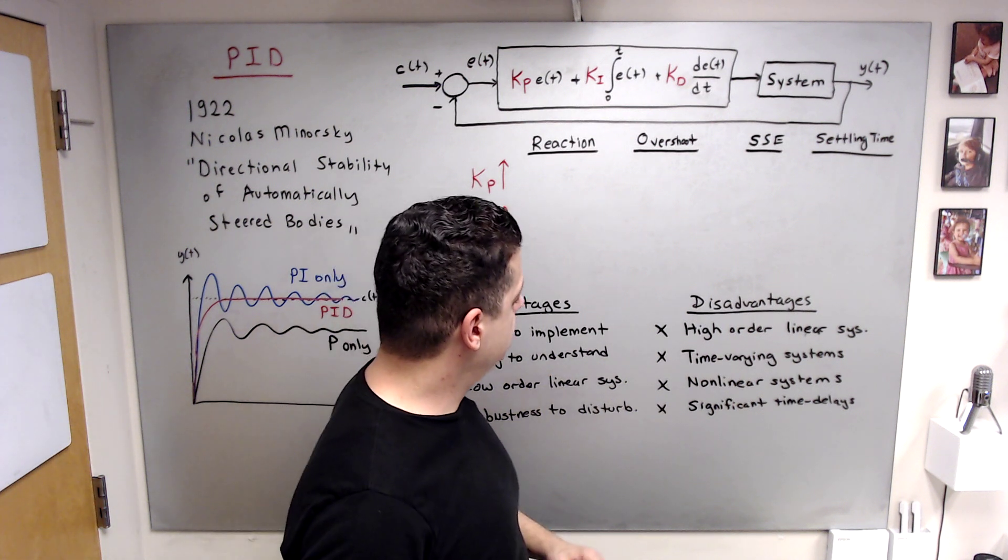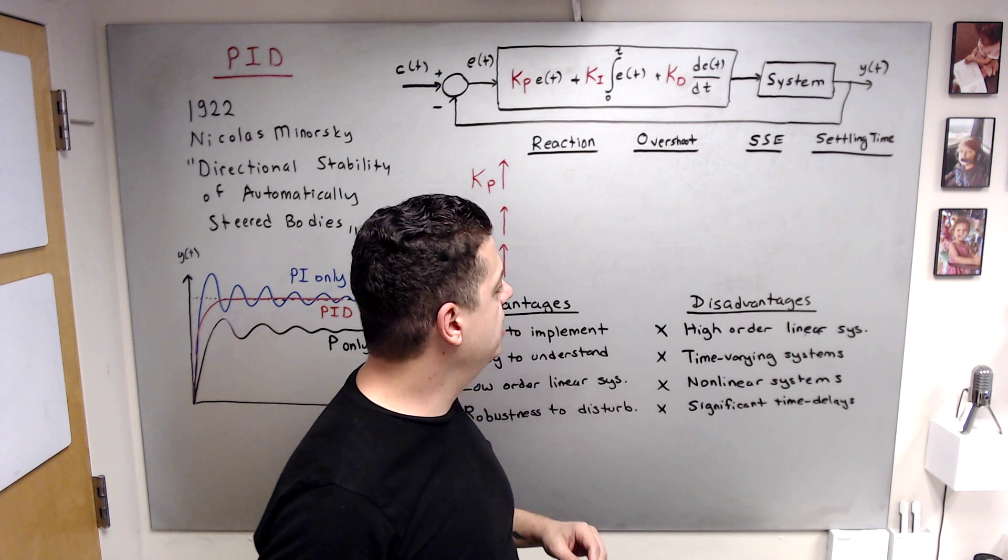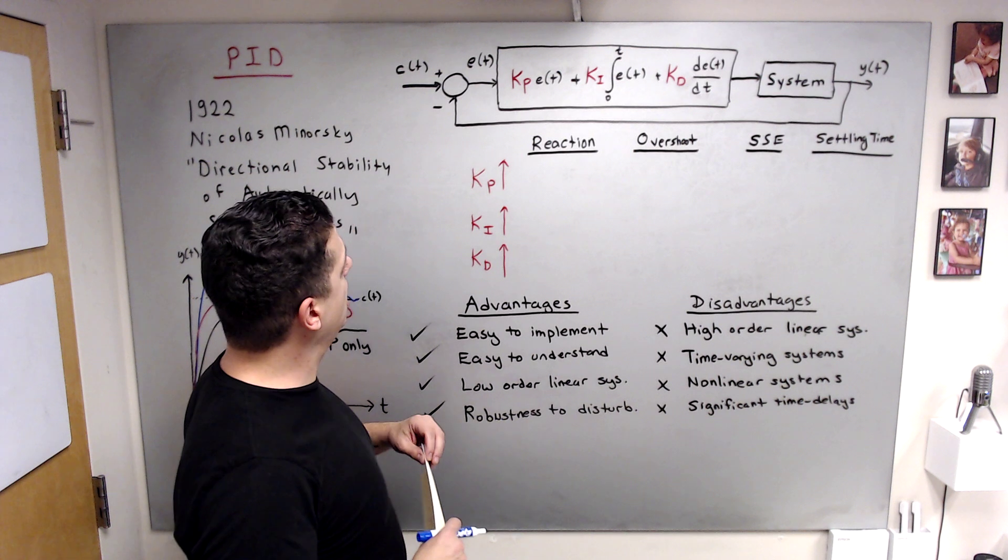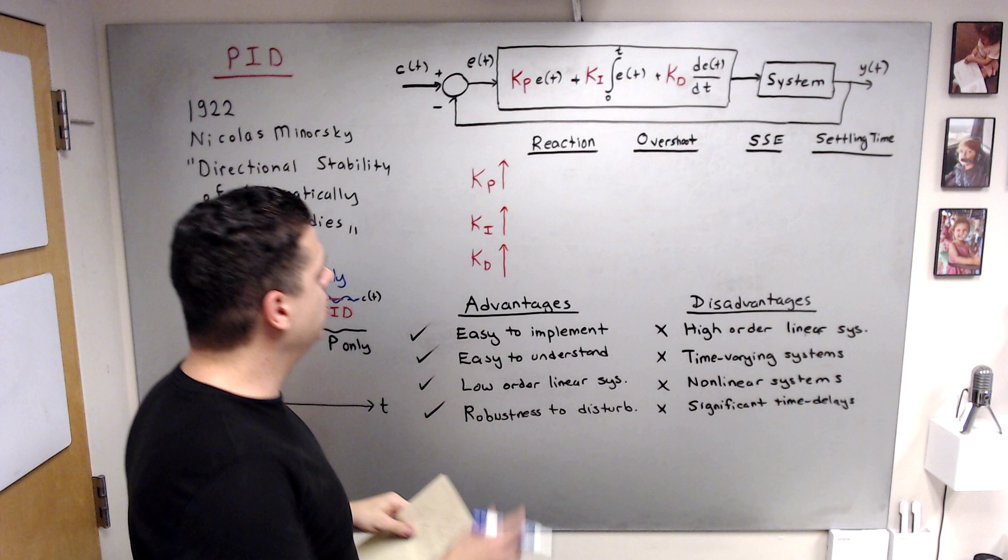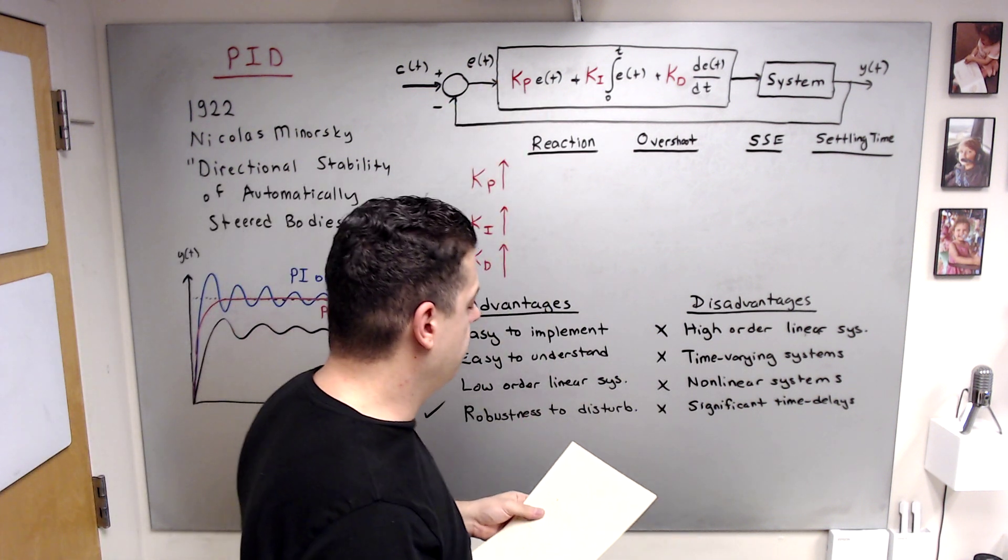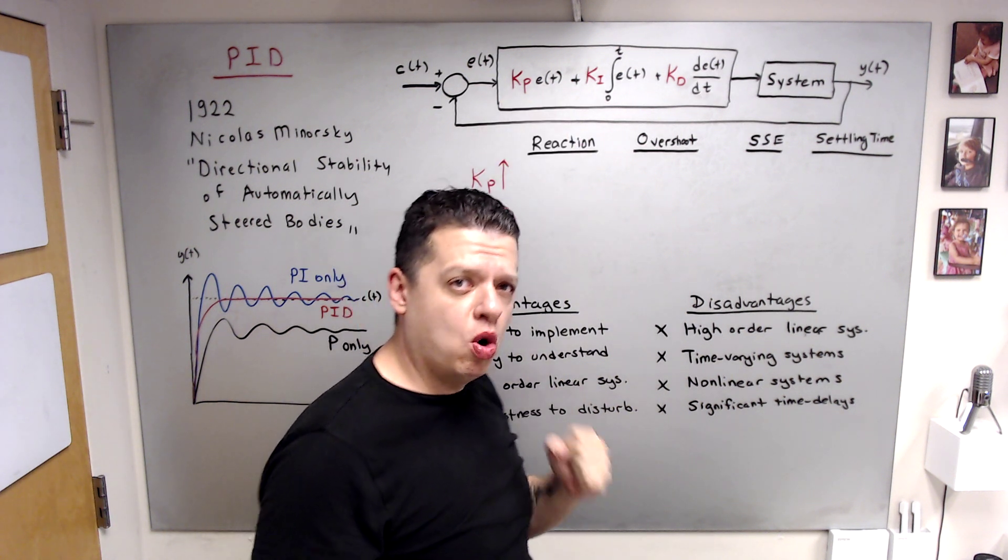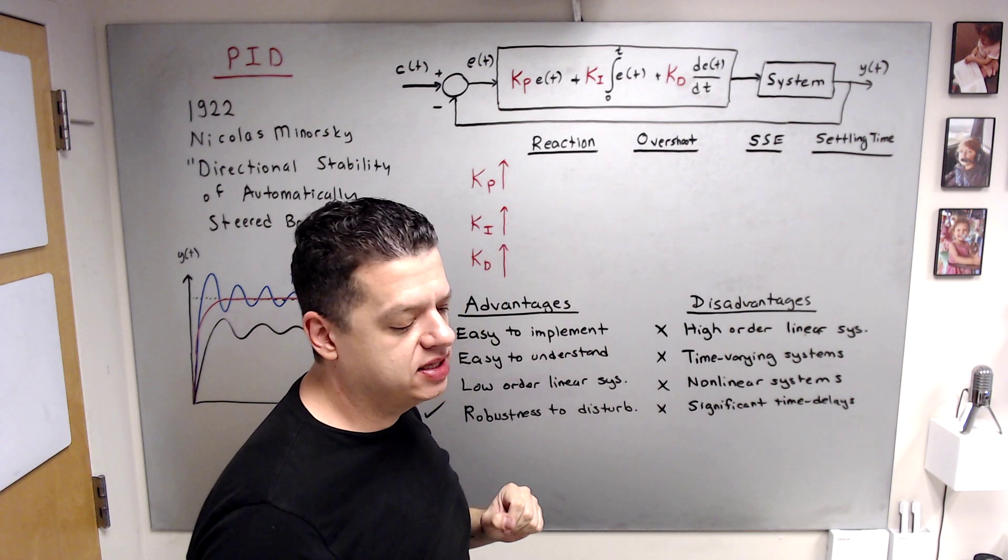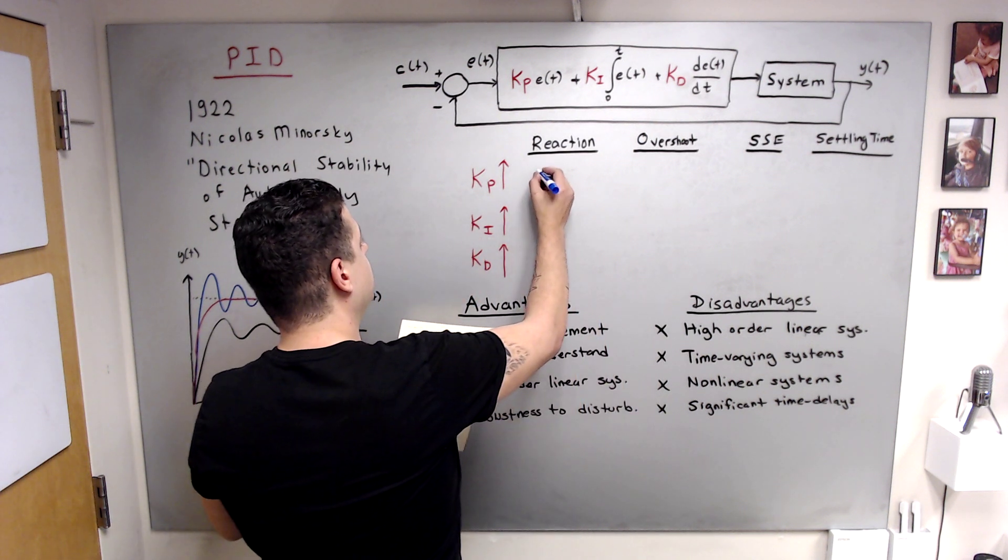And finally, if your system has significant time delays or considerable time delays, PID may not work. All right, first, let's understand Kp's effect. If you increase this gain Kp from zero to some number, since it directly multiplies the error, control hits harder to the system. It helps system to react quickly, so you are going to have a better rise time. So reaction is quicker.